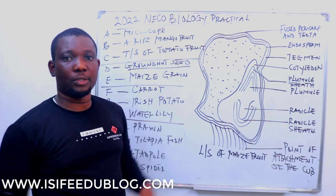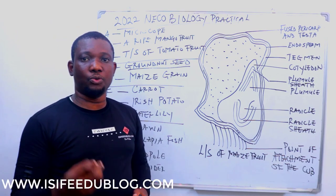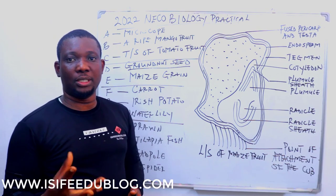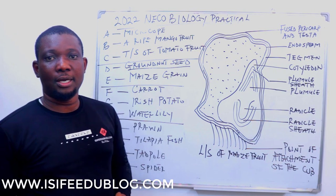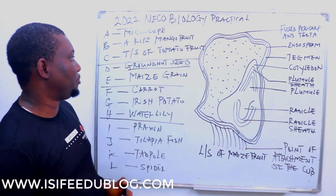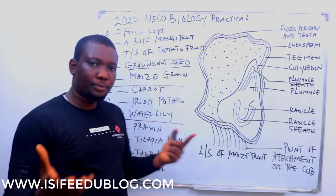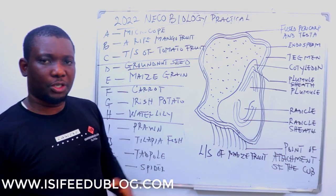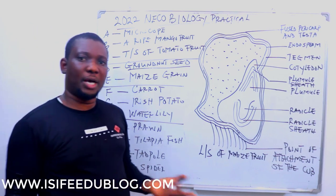Groundnut can split into two, so groundnut is a type of dicot — a dicotyledonous plant. Dicot means two-seeded or two-cotyledon plant. The examiner is going to ask questions about this.